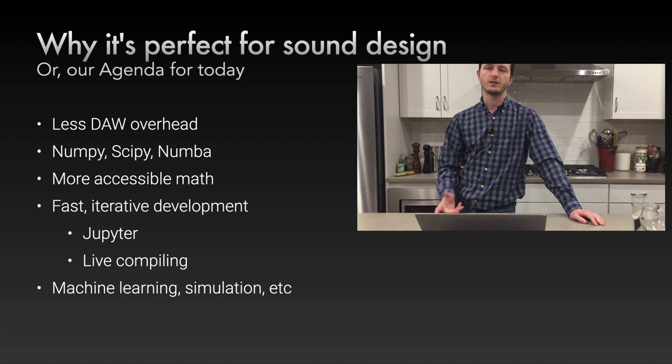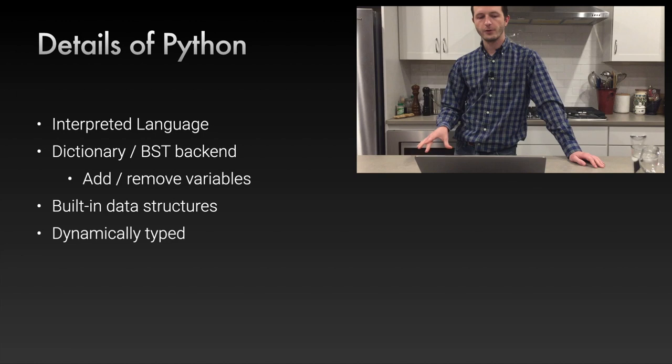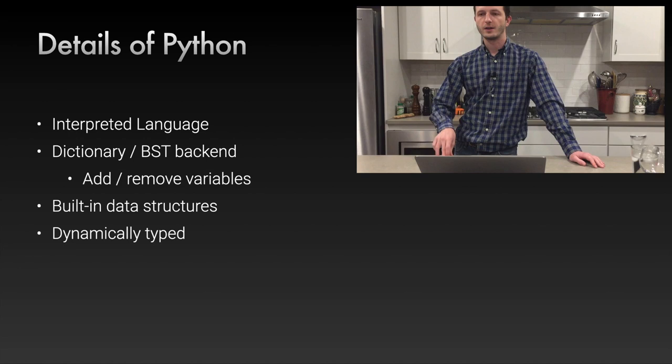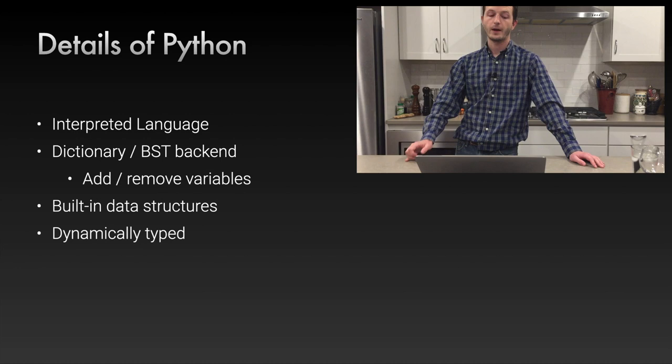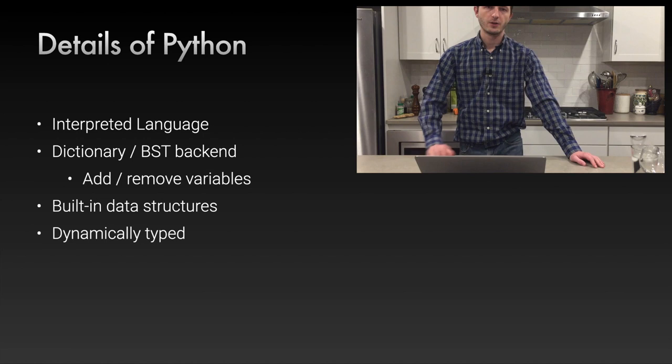Python is an interpreted language, meaning it's compiled as you run it. It has a dictionary backend — a key-value pair on a binary search tree — which gives Python its flexibility. This allows dynamic typing, changing variables on the fly, and even overriding functions on the fly. It has built-in data structures and dynamic typing, all contributing to making it a flexible language.